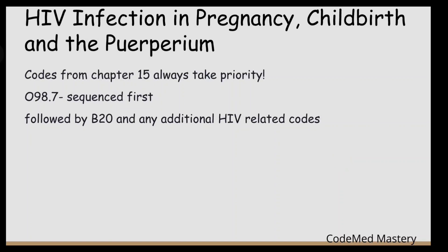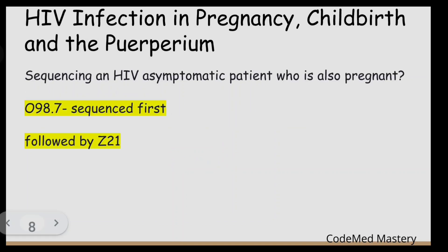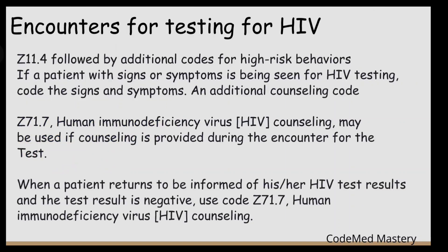The next guideline covers HIV infection in pregnancy, childbirth, and the puerperium. Codes from Chapter 15 always take sequencing priority — the O codes take priority over other codes. For an HIV-positive patient who is also pregnant, we use code O98.7 sequenced first, followed by B20 and any additional HIV-related codes. For an asymptomatic HIV patient who is also pregnant, O98.7 is sequenced first followed by Z21.